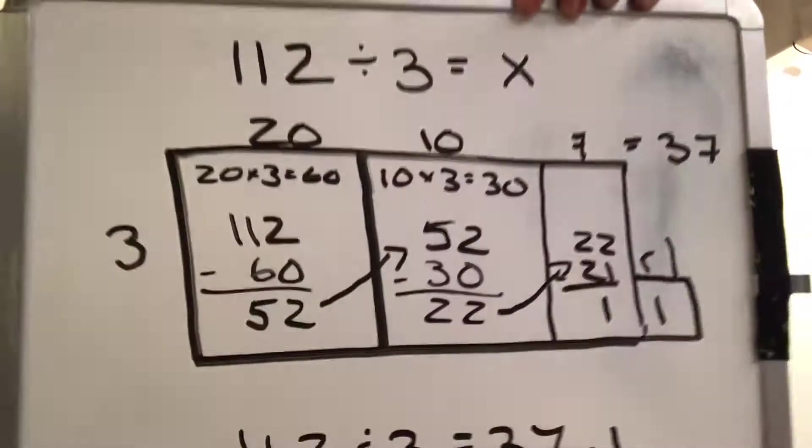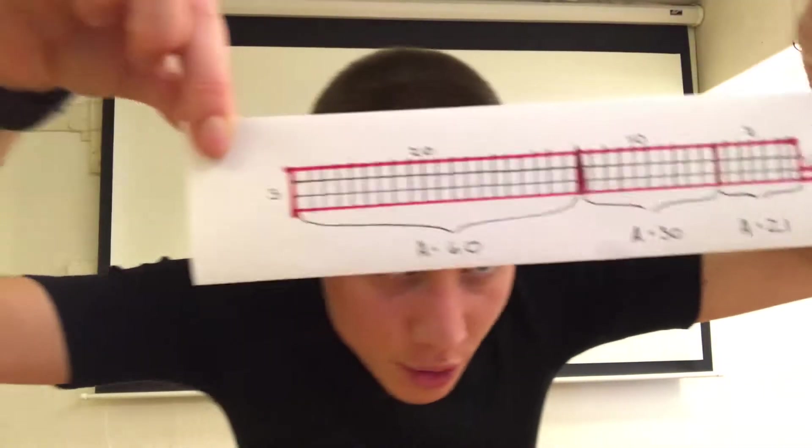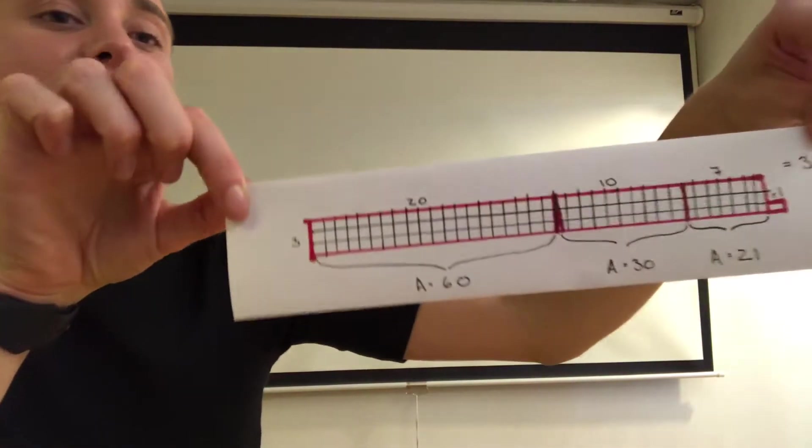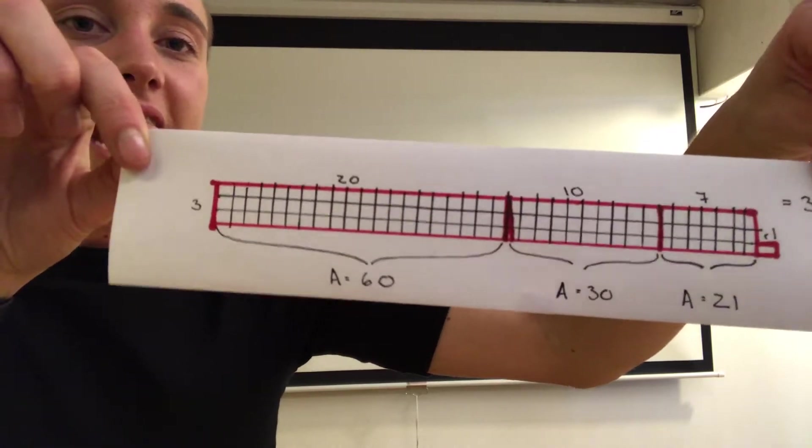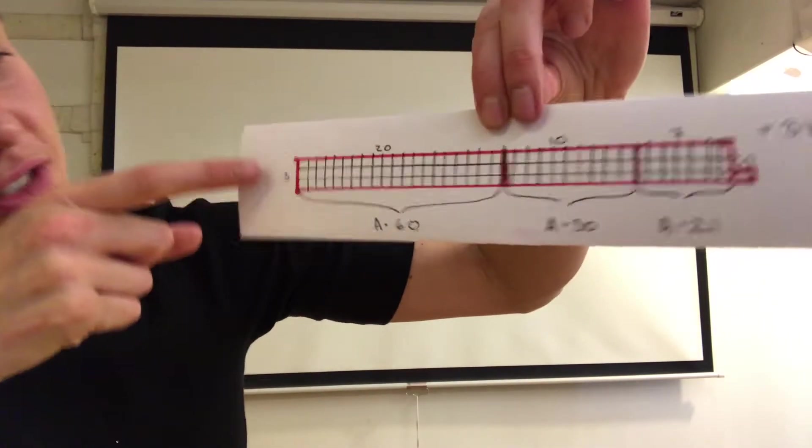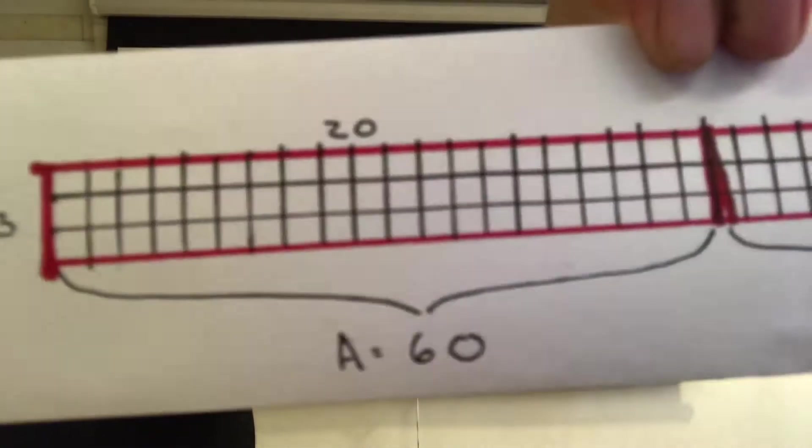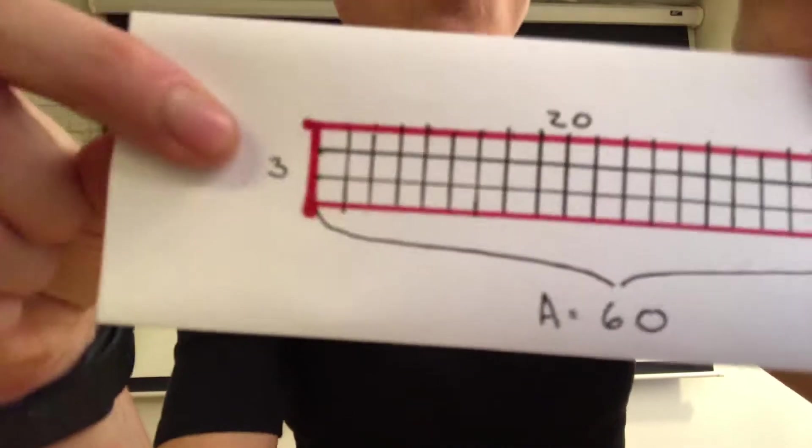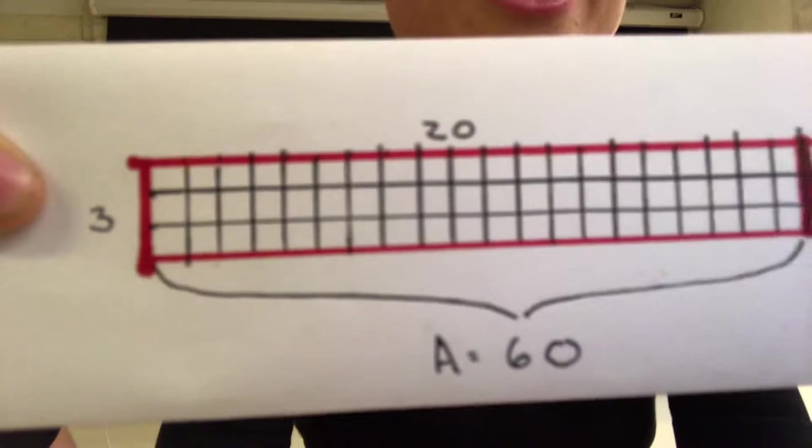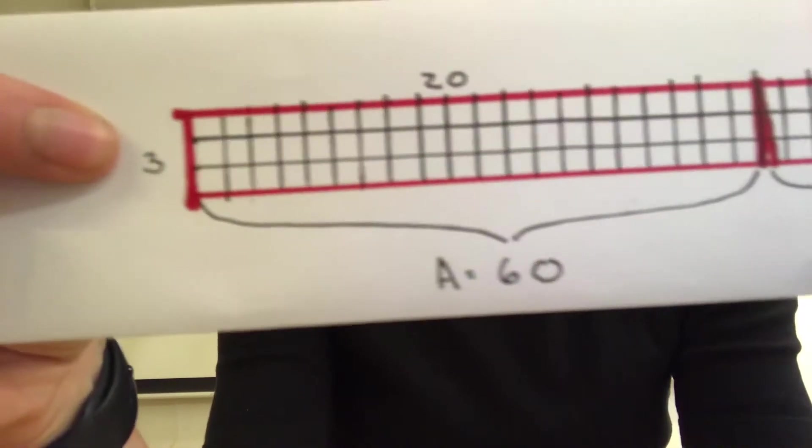To help you out even more, I've drawn this to scale. These models will never be perfectly to scale because we would drive ourselves crazy and that would take too long. But here is what 112 divided by 3 looks like to scale using the area model. You can see that I have my length of 3 ice cubes. And then across in my first section I have 20. The area of that entire section is 60 ice cubes. I have 60 little boxes here.